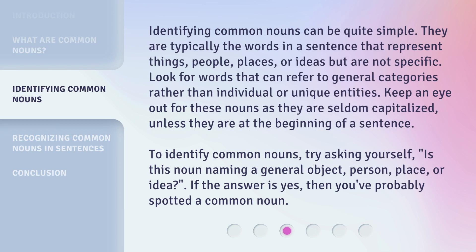Identifying common nouns can be quite simple. They are typically the words in a sentence that represent things, people, places, or ideas, but are not specific. Look for words that can refer to general categories rather than individual or unique entities. Keep an eye out for these nouns as they are seldom capitalized unless they are at the beginning of a sentence. To identify common nouns, try asking yourself: is this noun naming a general object, person, place, or idea? If the answer is yes, then you've probably spotted a common noun.